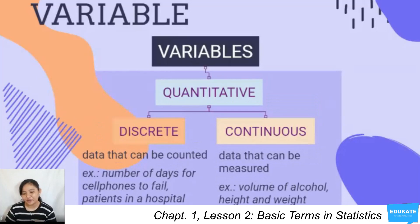Your quantitative variables can be divided into two types: discrete or continuous. Discrete quantitative variables are data that can be counted, while continuous quantitative variables are data that can be measured. Examples for discrete quantitative variables are number of days for cell phones to fail, patients in a hospital. For continuous quantitative variables, you have volume of alcohol, height, and weight.